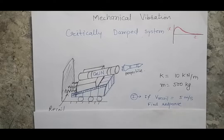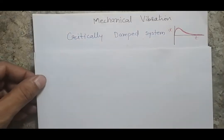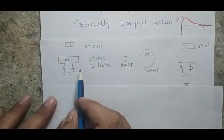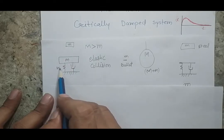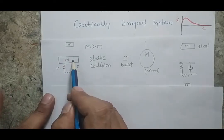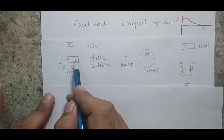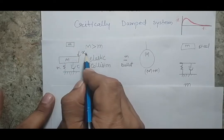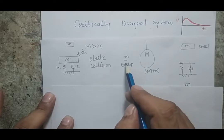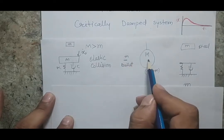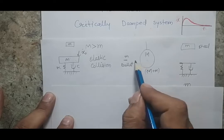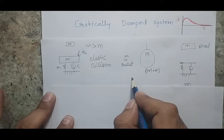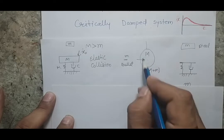In our previous class, we discussed an under-damped system where we discussed different problems, like when a mass is falling on a larger mass which has stiffness and damping. After collision, what will happen and how this mass will vibrate. We assumed that when it falls onto this mass, it will impart one velocity to the system. We also discussed a case where a bullet is fired and hits the body, resulting in a complete plastic collision. Finally, the mass will be m plus m, and by applying the momentum equation, you will get the imparted velocity to the system.